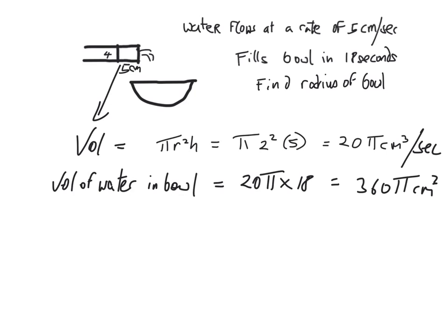Okay, so that's just one second, but we're told that the water flows for 18 seconds in order to fill the bowl. So the water that ends up being in the bowl will be 18 times 20π. So 18 times 20π gives us 360π cm³. So that's the volume of water that ends up being in the bowl. And this is the total volume that ends up being in the bowl. So we can say the total volume of water that flows through the pipe is 360π. And now we can start thinking about getting the radius of the bowl.